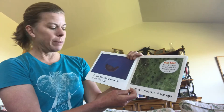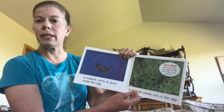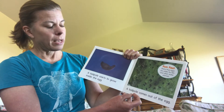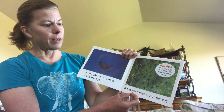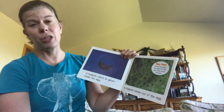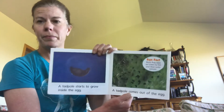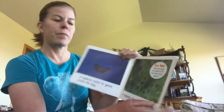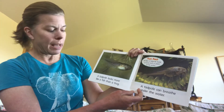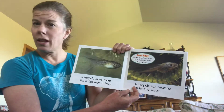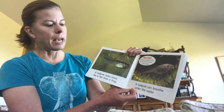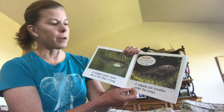A tadpole starts to grow inside the egg. A tadpole comes out of the egg. Many frog eggs are eaten by fish and other water animals. A tadpole looks more like a fish than a frog. A tadpole can breathe under the water.